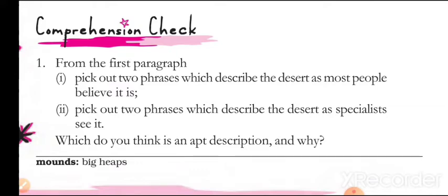The following phrases describe the desert as seen by specialists: a beautiful place, and the home of a variety of people, animals, and plants that have learned to live under very hot and dry conditions. So there is a big difference in the views — by common people with common belief, and as viewed by the specialists who have actually studied about the desert.